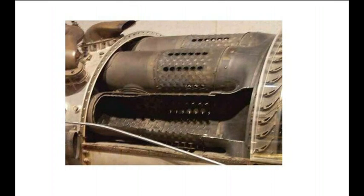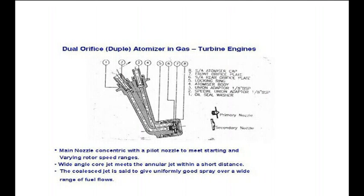The gas turbine combustor is something everybody is very familiar with — it has an injector and then it burns, needing dilution after combustion. You need to give the right type of pattern factor at the exit of the combustor. A large part of the combustion process is really controlled by this little element — the injector at the entry of the combustor. There are a number of such atomizers; one of them which came to me for testing was a dual orifice type of atomizer.